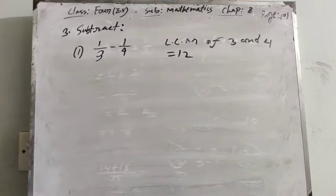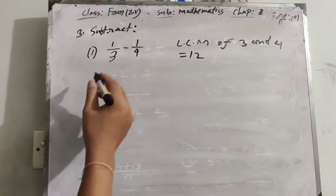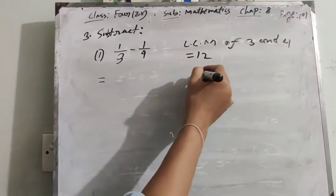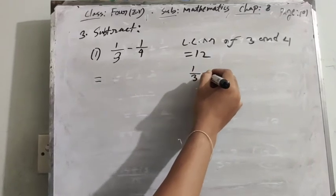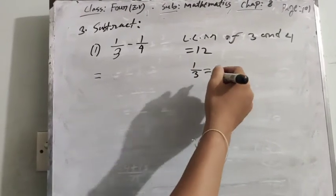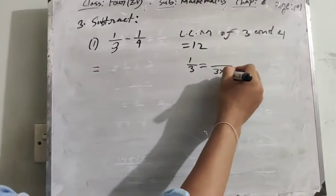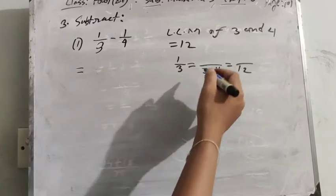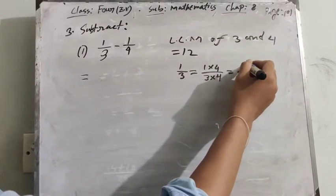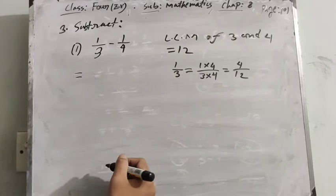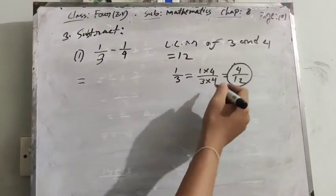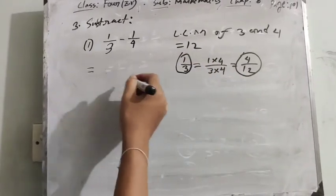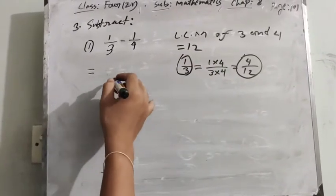12 is the multiplication of 3 and 4. In the first fraction, you can see 1/3. The denominator 3 multiplied by 4 equals 12, and 1 multiplied by 4 equals 4. So 4/12 is the equivalent fraction of 1/3. We can write 4/12.